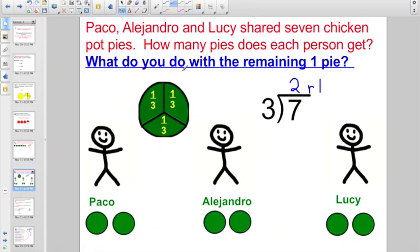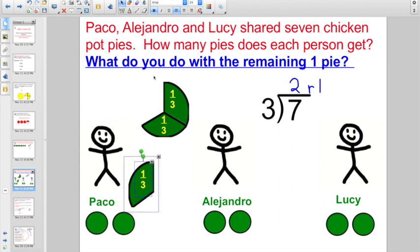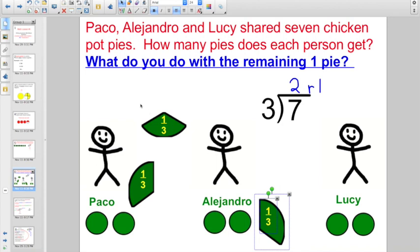So what do you do with the remaining one pie? We already said Paco gets two, Alejandro gets two, and Lucy gets two. You're taking that last remaining pot pie and having to share it with each person, right? In which case, Paco would get two and a third. Alejandro would get two and a third. And Lucy would get two and one third.